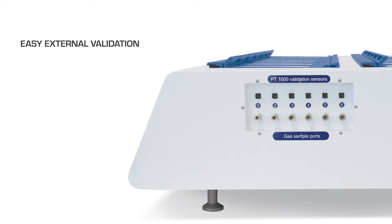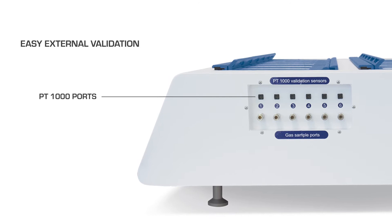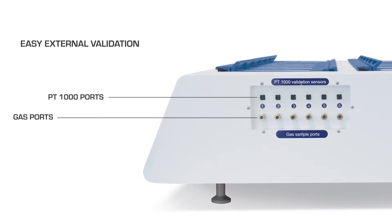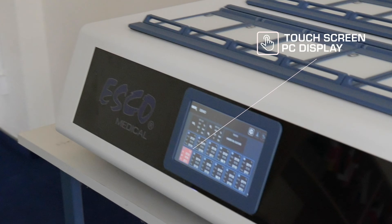For gas and temperature validation, simply connect the gas and temperature analyzer in the PT-1000 sensors and gas ports located at the side of the device. The touchscreen display panel allows users to control and monitor important parameters simultaneously.